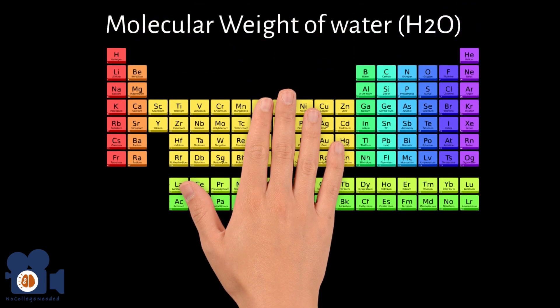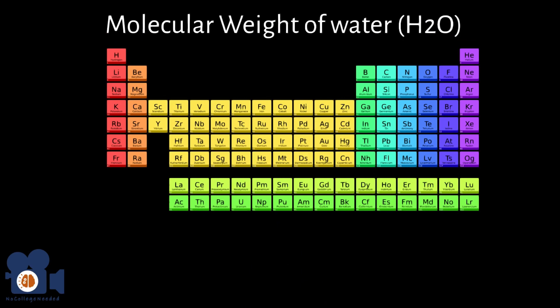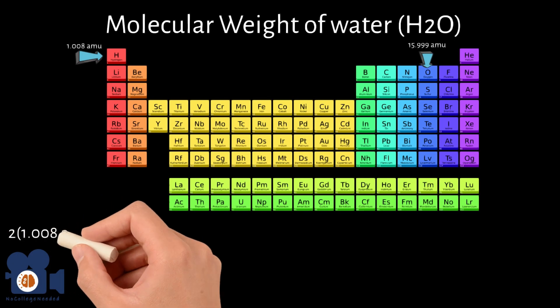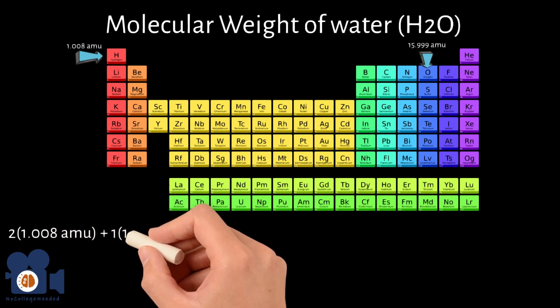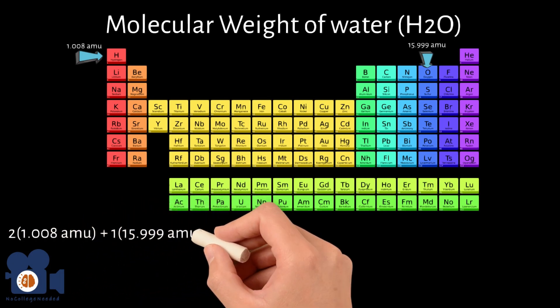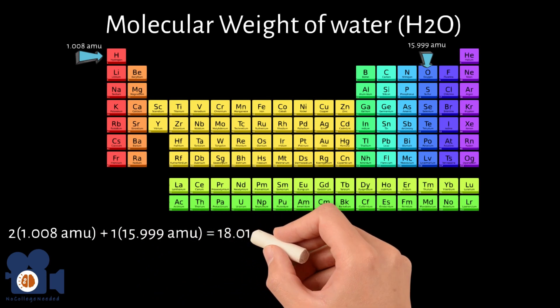We can look at the periodic table to get the corresponding AMUs for hydrogen and oxygen. To calculate the molecular weight of water, we add up the AMUs for all the atoms. In this case, the formula is 2 times 1.008 AMU plus 1 times 15.999 AMU equals 18.015 AMU.